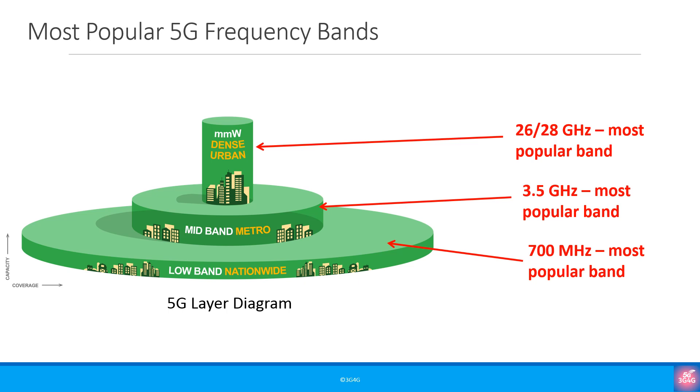If you follow the 5G auctions or deployments, most popular bands for different layers are 700 MHz in coverage layer, 3.5 GHz in capacity layer and 26 or 28 GHz in the high throughput layer.